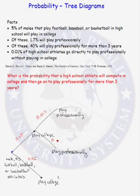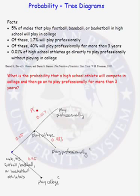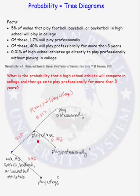That means 0.983 do not play professionally. Remember, this is a conditional probability — it's the probability that they play professionally given that they played in college. Similarly, 0.983 is the probability that they do not play professionally given that they did play in college.